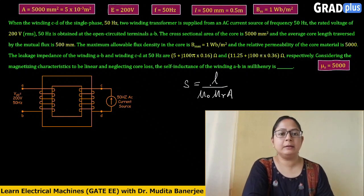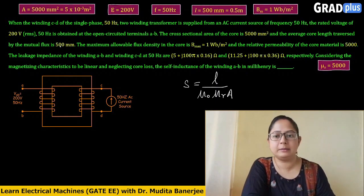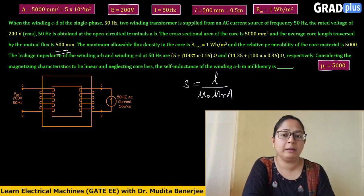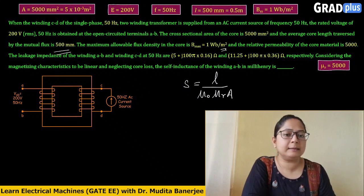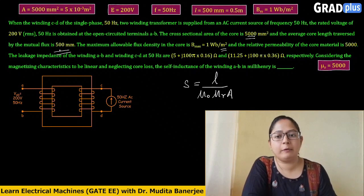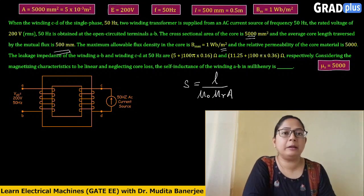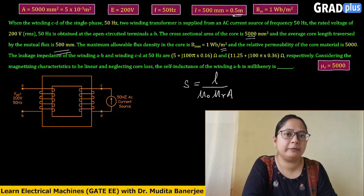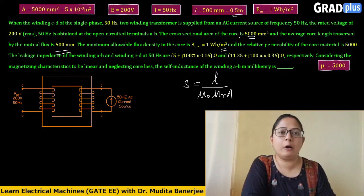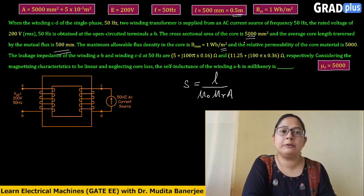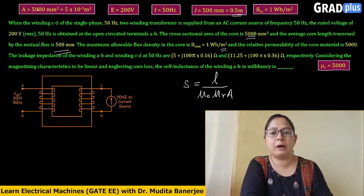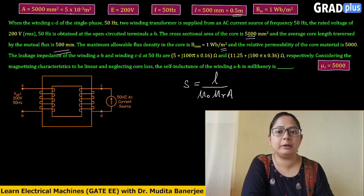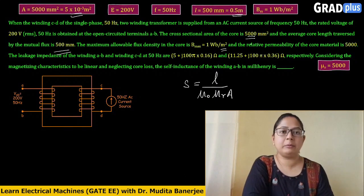Here, l is the core length given as 500 mm. We must convert to meters because BM is in Weber per meter squared, so all units must be in meters. Converting 500 mm to meters: multiply by 10⁻³ to get l = 0.5 m. For the cross-sectional area of 5000 mm², multiply by 10⁻⁶ to get A = 5 × 10⁻³ m². Now all values are in consistent SI units.